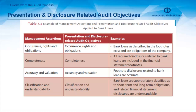For management assertion completeness, the audit objective is completeness — all required disclosures related to bank loans are included in the financial statements' footnotes. For management assertion accuracy and valuation, the audit objective is accuracy and valuation — footnote disclosures related to bank loans are accurate. For management assertion classification and understandability, the audit objective is the same — bank loans are appropriately classified as short-term and long-term obligations, and related financial statement disclosures are understandable.